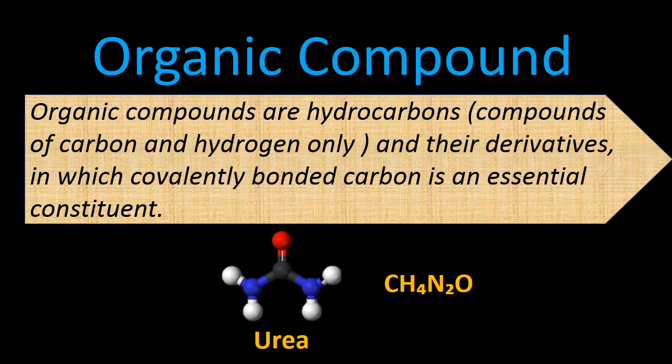Now here, what is the meaning of the word derivative? As we know, carbon satisfies its four valences — it is group 4A, so it forms four bonds having four electrons in its valence shell. When these four bonds are formed with hydrogen atoms it will be known as a hydrocarbon, and when one atom is replaced by another atom like sulfur.